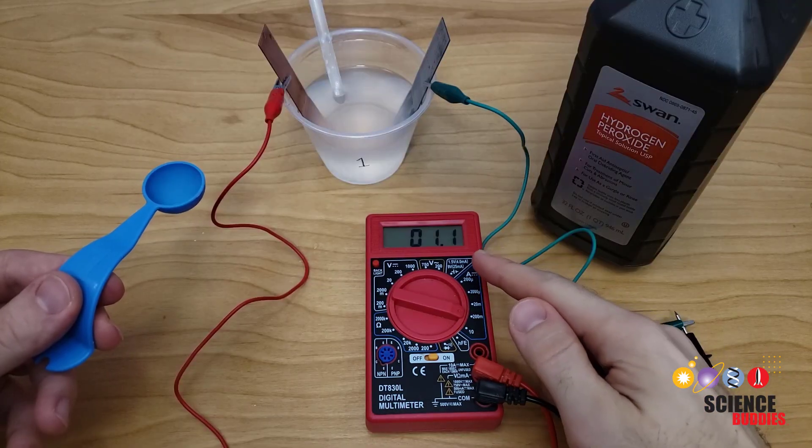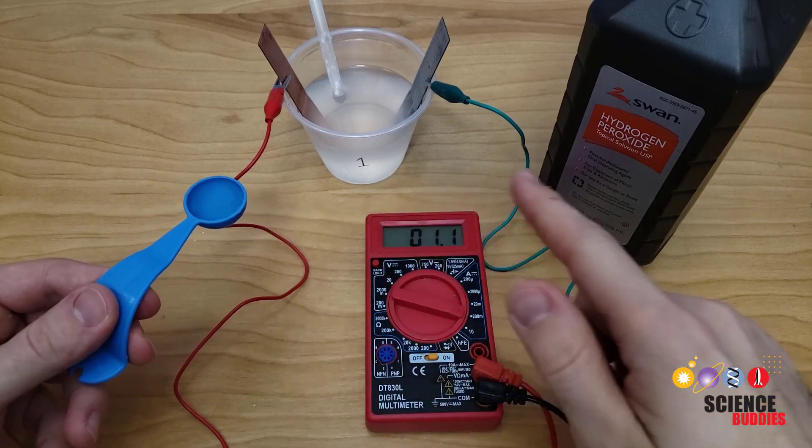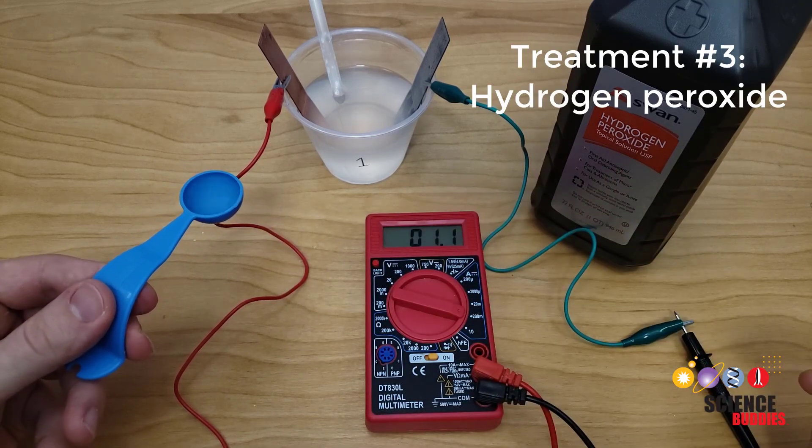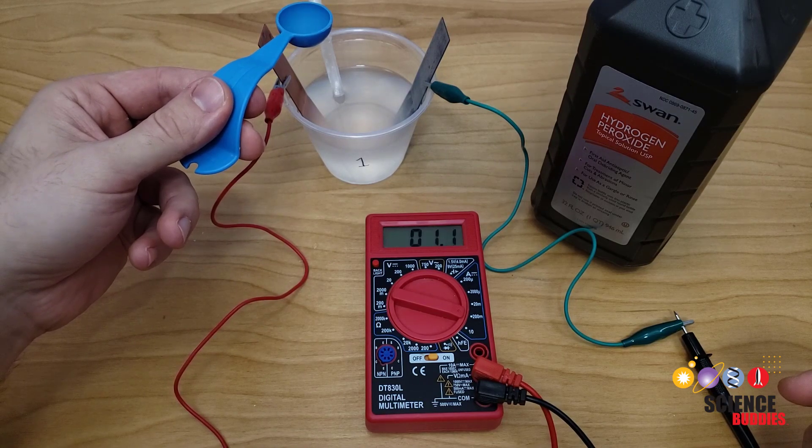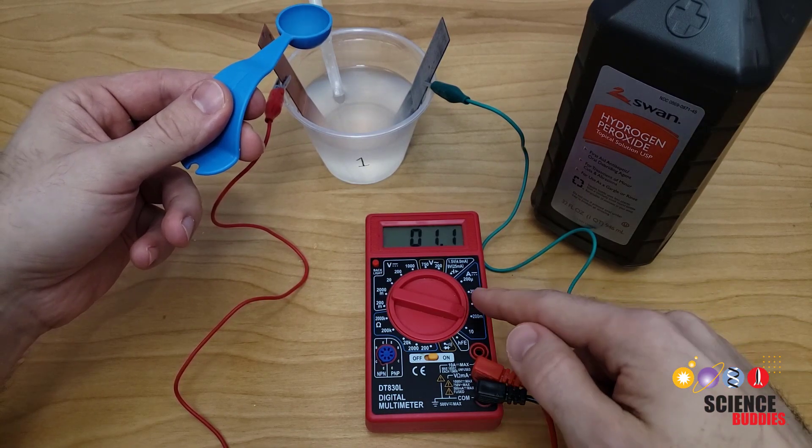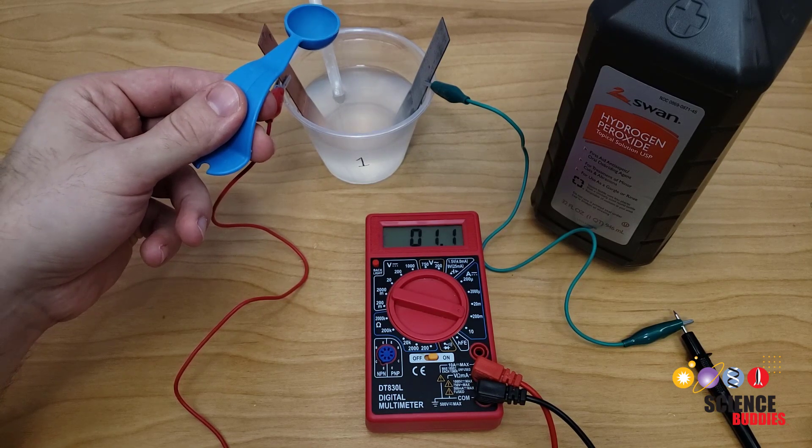After the current reading has stabilized again, now you're ready to try a chemical treatment. Add one teaspoon of 3% hydrogen peroxide to your battery. Immediately stir with a straw to mix it completely, then record the peak current reading, and again wait three minutes and record the stabilized reading.